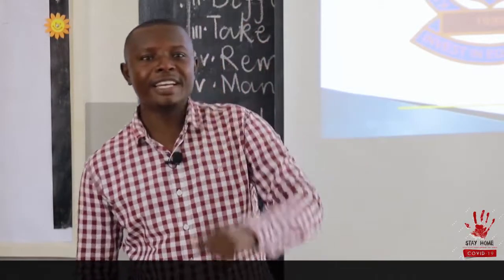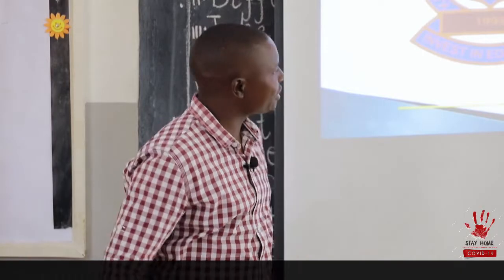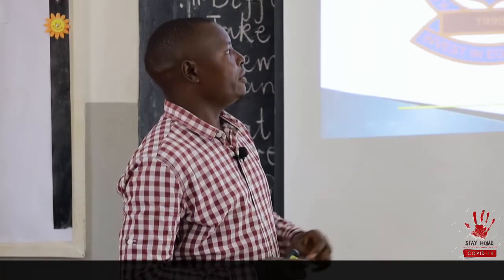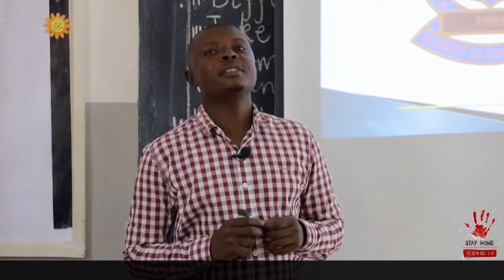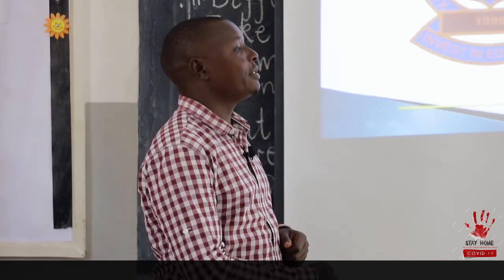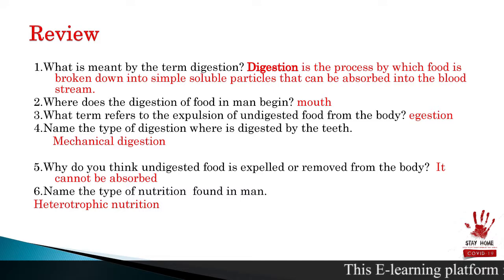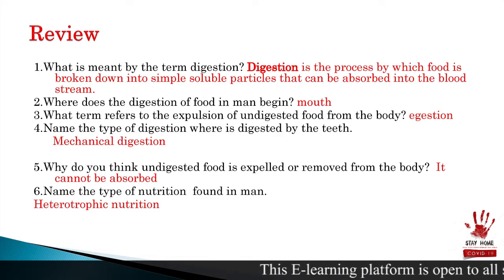Welcome to P5 class. Today we are still looking at the digestive system of man, and we shall be looking at enzymes. But first, let's go through the activity from last time. Number one was: what is meant by the term digestion? Digestion is the process by which food is broken down into simple soluble particles that can be absorbed into the bloodstream. Where does digestion begin in man? It begins from the mouth — there is mechanical digestion in the mouth.